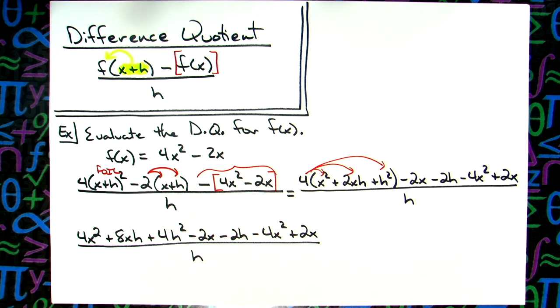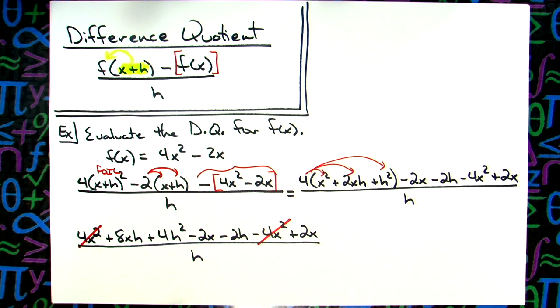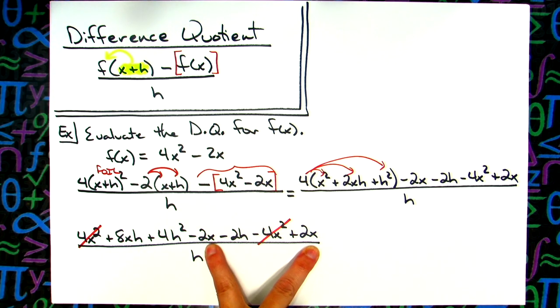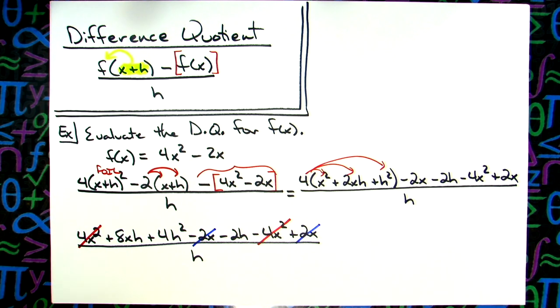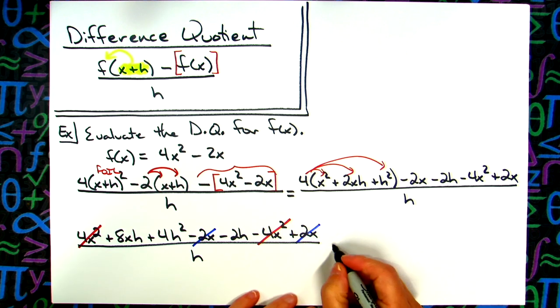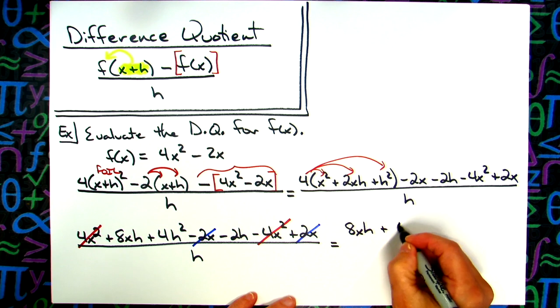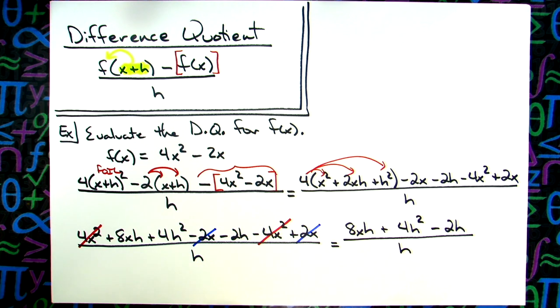Now I'm going to go through and distribute. So I'm going to have 4x squared, 8xh and 4h squared. And then just rewrite the rest of it. Minus 2x minus 2h minus 4x squared plus 2x all over h. Now, if you have done up to this point correctly and you have not messed anything up, then several of the terms should cross out. I'm seeing a positive 4x squared and a negative 4x squared, so those two are going to cross out. I'm also seeing a negative 2x and a positive 2x.